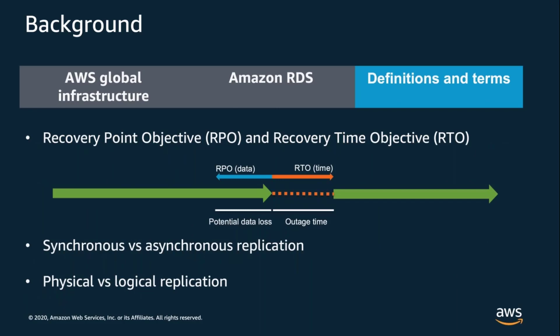Recovery Point Objective, or RPO, refers to the point in time to which data can be recovered. RPO is a design goal or a business objective that helps you understand what a system is capable of and what your requirements are in terms of data loss during a recovery event. Recovery Time Objective, or RTO, refers to the time it takes to perform a recovery action. Understanding features in terms of RPO and RTO helps you make decisions about what's possible and what features to use.